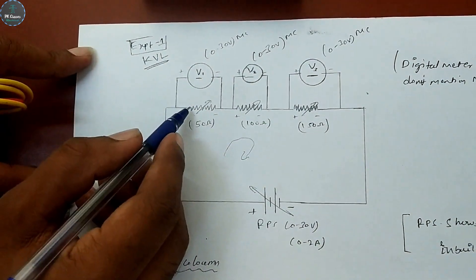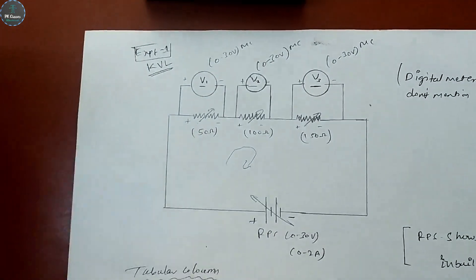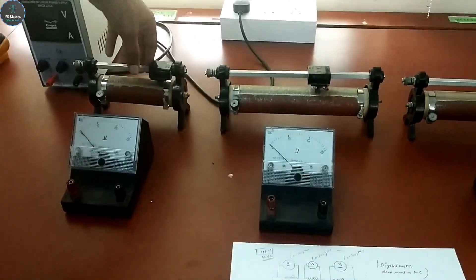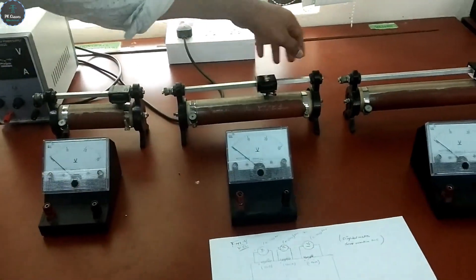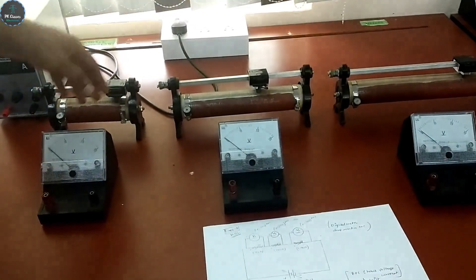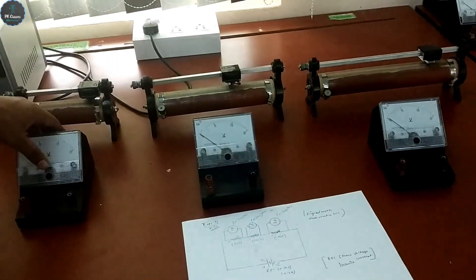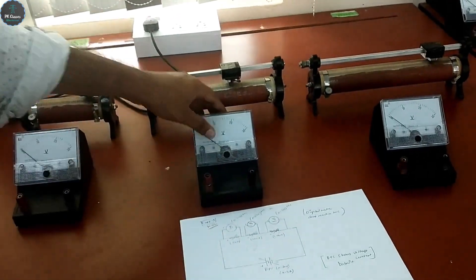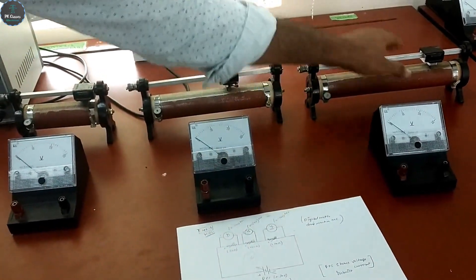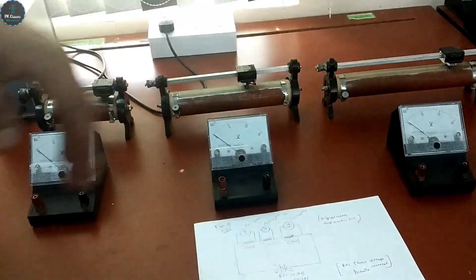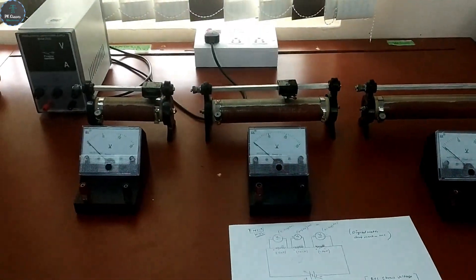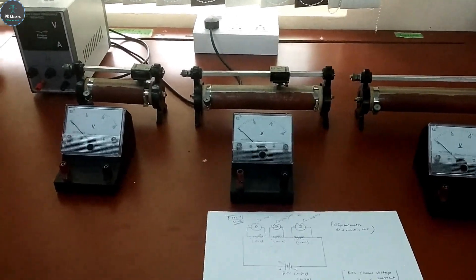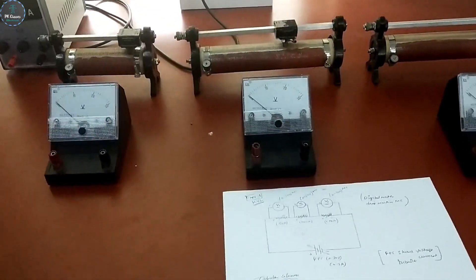The rheostats — 50 ohm, 100 ohm, and 150 ohm — are connected in series, with a voltmeter connected across each rheostat. Three rheostats and three voltmeters are used: one voltmeter per rheostat. Now let's start making connections based on the circuit diagram.